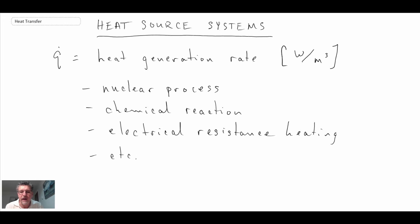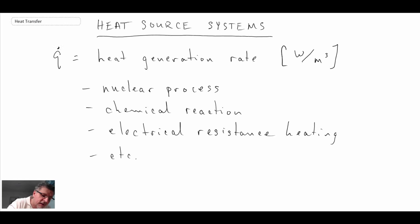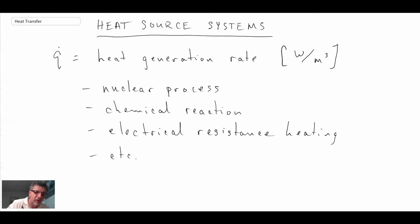So any kind of process where you have this generation, you need to address that. The way that we address it is through this Q dot term. So what we are going to do now is work an example problem that considers a system with heat generation in a slab.